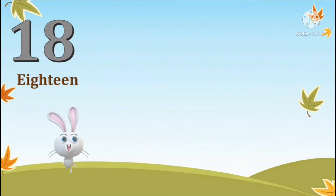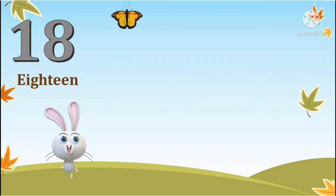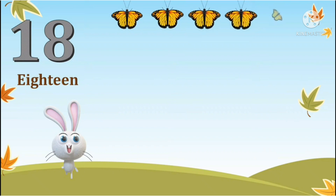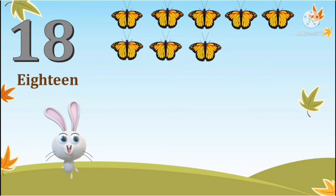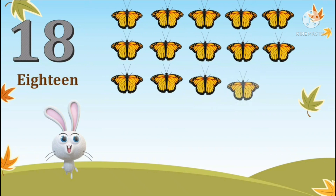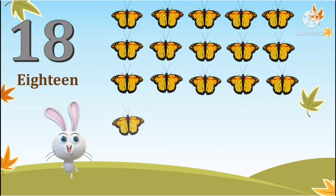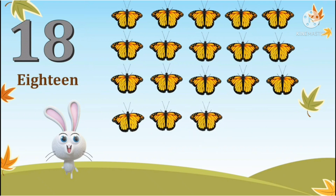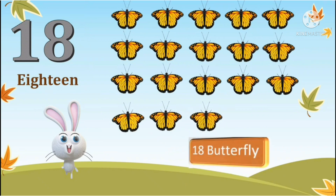Number 18. Now let's count 18 butterflies. 1, 2, 3, 4, 5, 6, 7, 8, 9, 10, 11, 12, 13, 14, 15, 16, 17, 18. There are 18 butterflies.